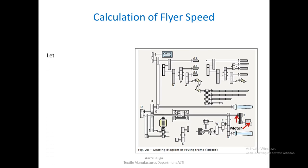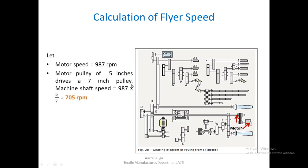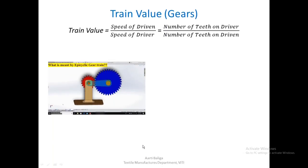Let the motor speed be 987 RPM. If the pulleys driving the machine shaft are 5 and 7 inches respectively, then motor speed × 5/7 gives the machine shaft speed. From the machine shaft it goes directly to the spindle on which the flyer is mounted. With gear wheels 35, 34, 34, and 27 — going from wheel 35 to 34, then from bevel 34 to bevel 27 driving the upright spindle — the flyer speed is 914 RPM.